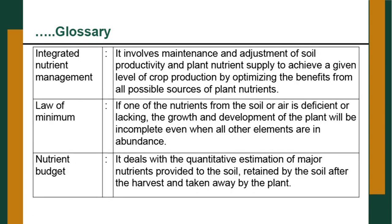Integrated Nutrient Management involves the maintenance and adjustment of soil productivity and plant nutrient supply to achieve a given level of crop production by optimizing the benefits from all possible sources of plant nutrients. Law of Minimum: if one nutrient from the soil or air is deficient or lacking, the growth and development of the plant will be incomplete even when all other elements are in abundance. Only the limiting nutrient can affect the availability and uptake of others.